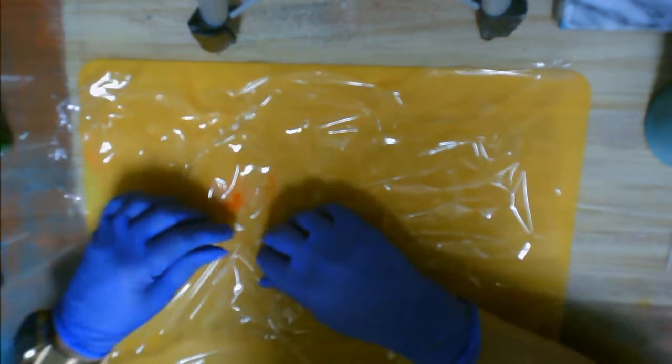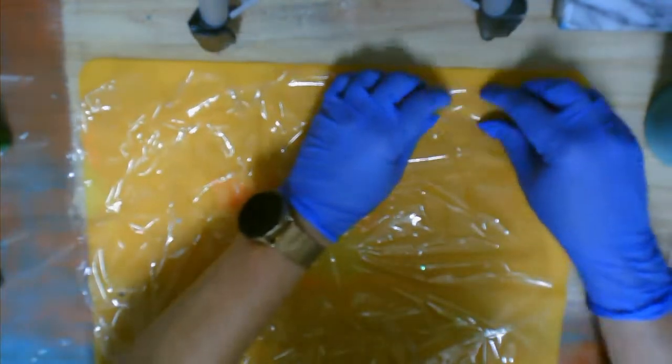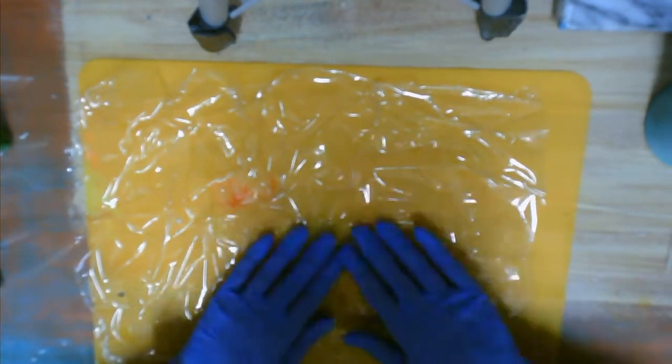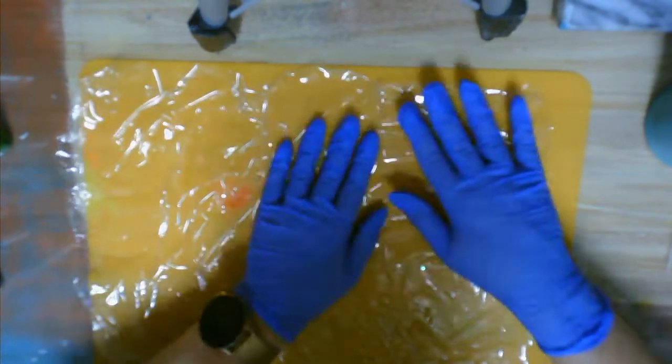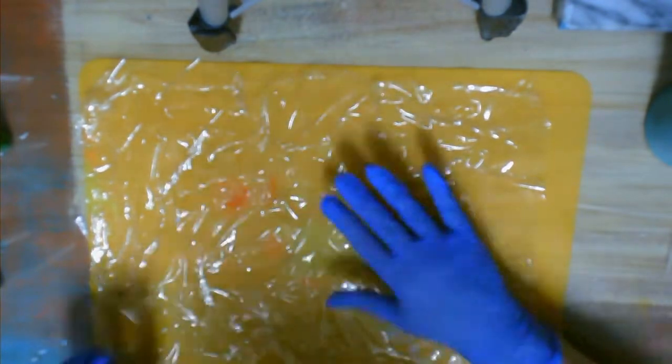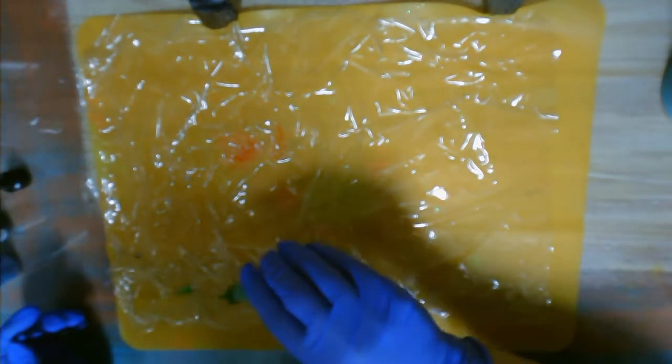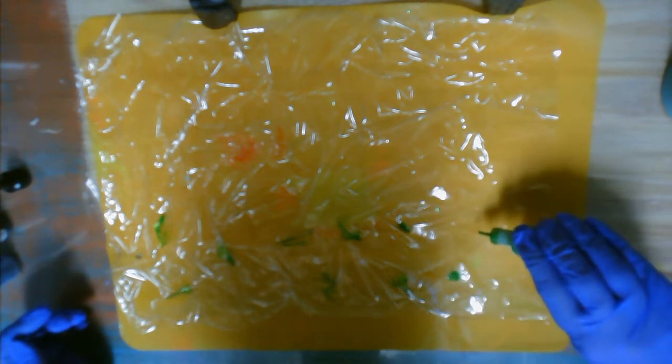I'm starting off by scrunching up the plastic all around because I want to have a kind of pattern when I wrap this around the cup. Then I'm going to pat it down into place so it tries to hold that look I'm trying to achieve. I'm just adding little drops of alcohol ink all over the plastic in a random order - not any special design.